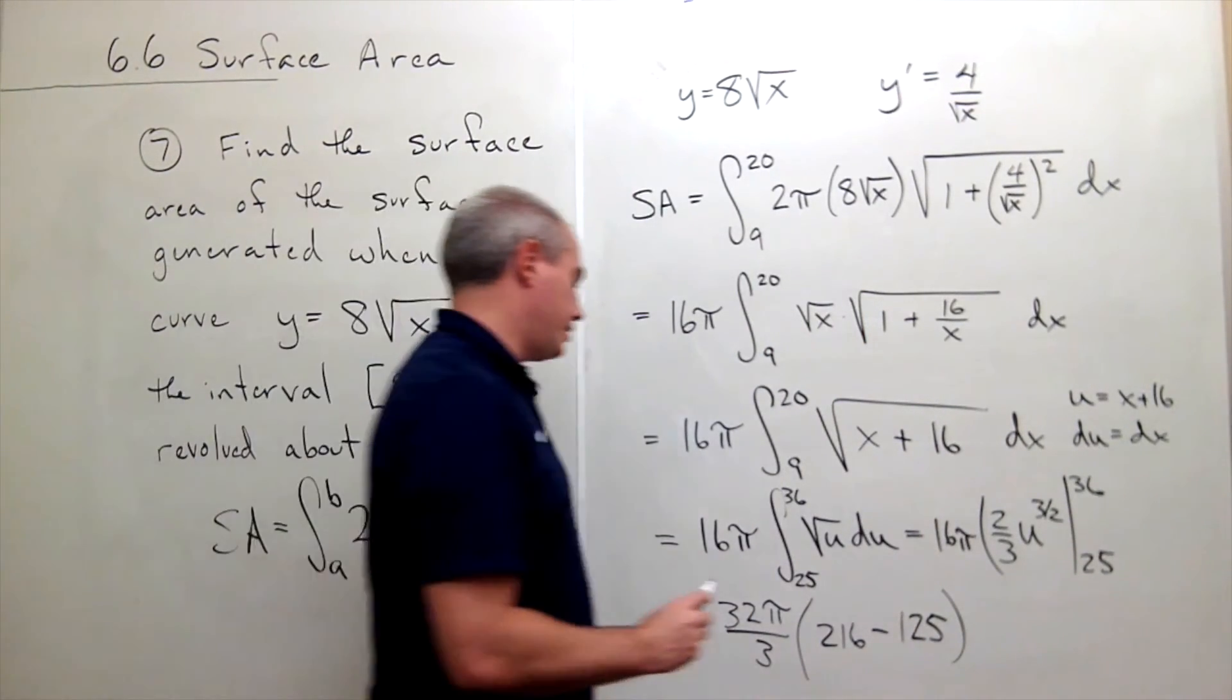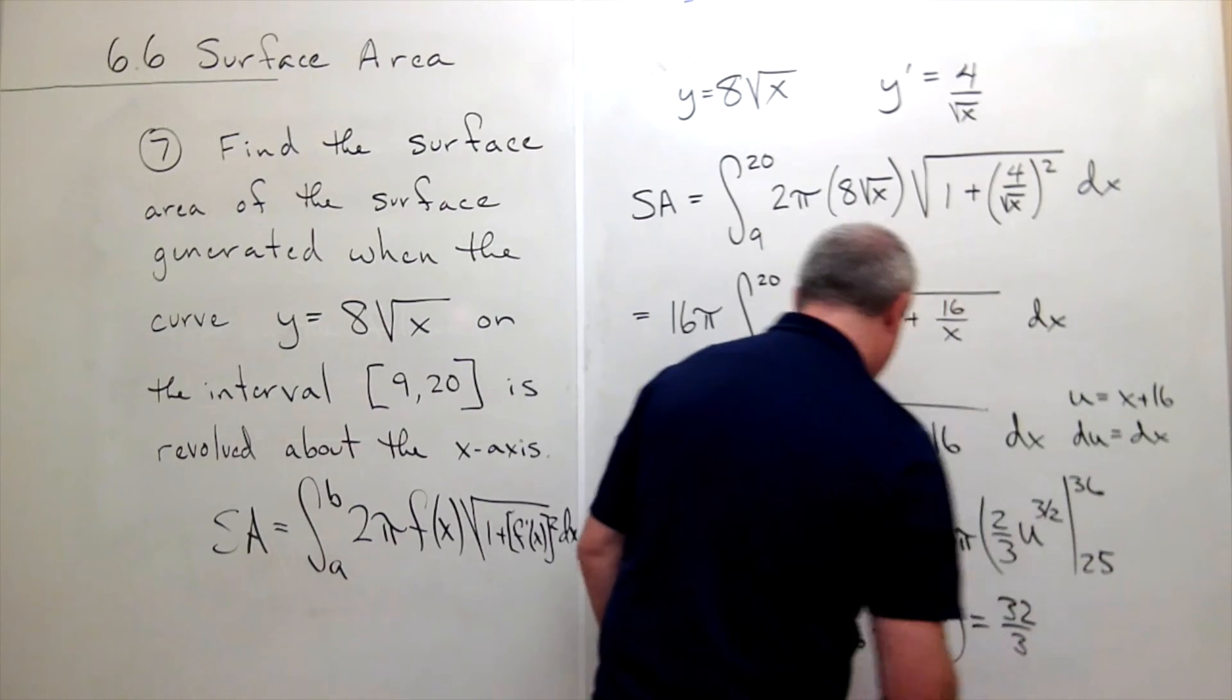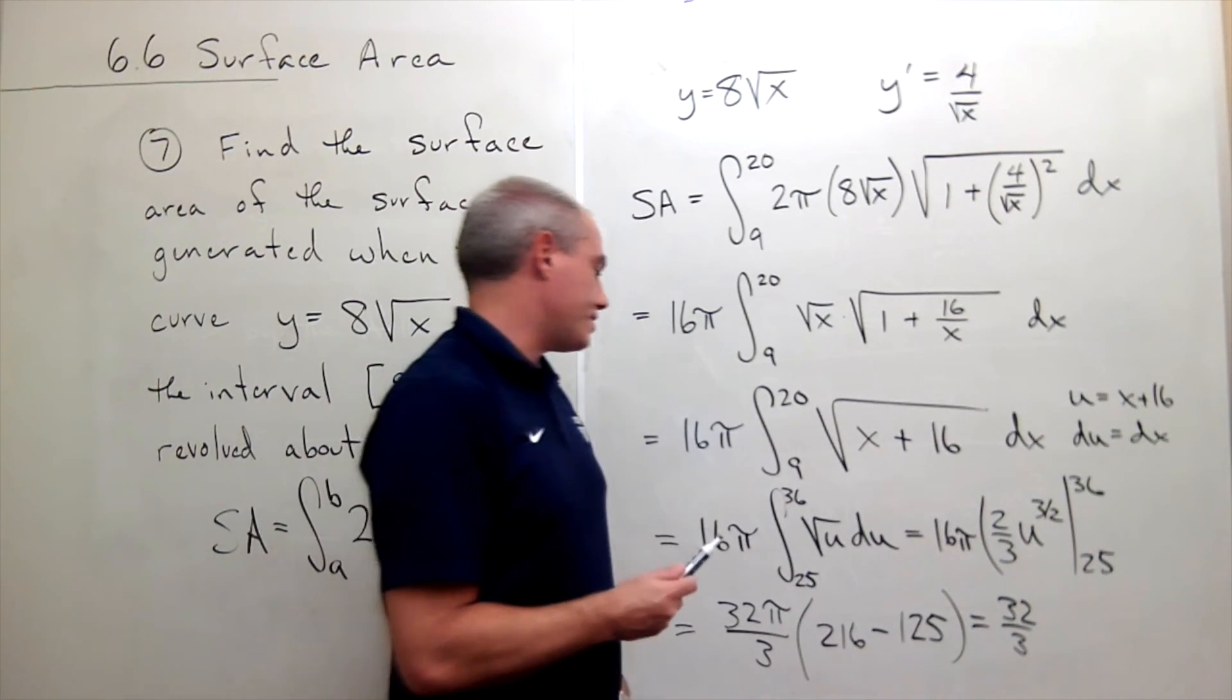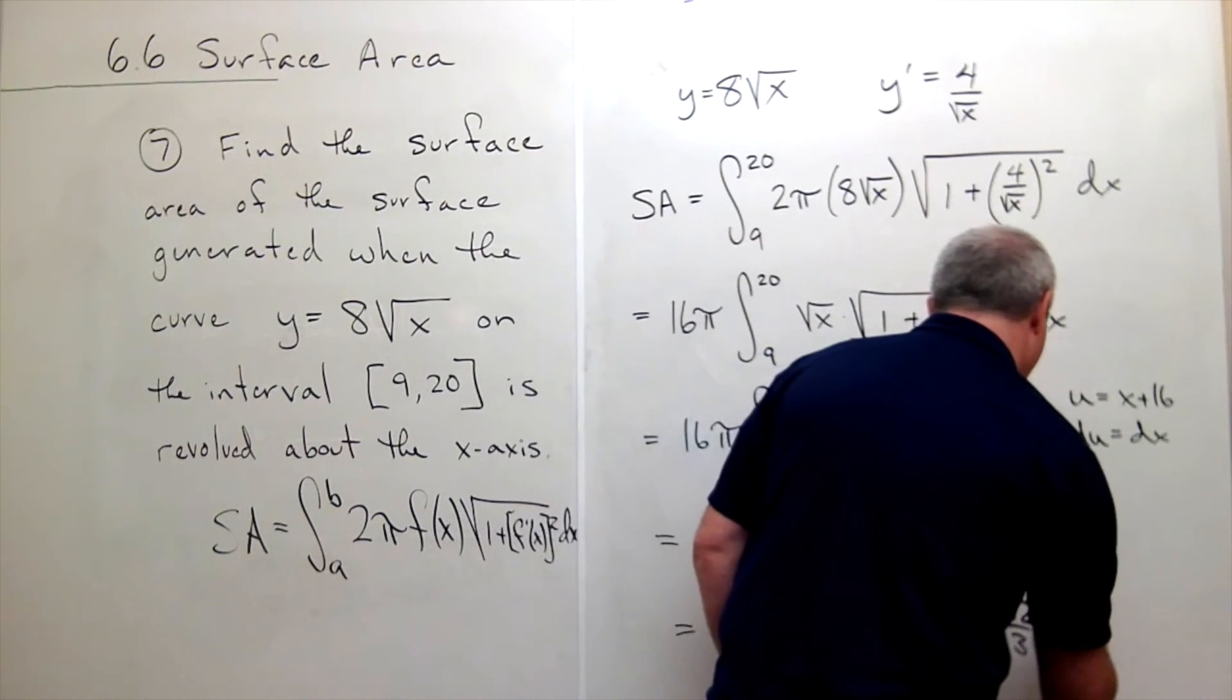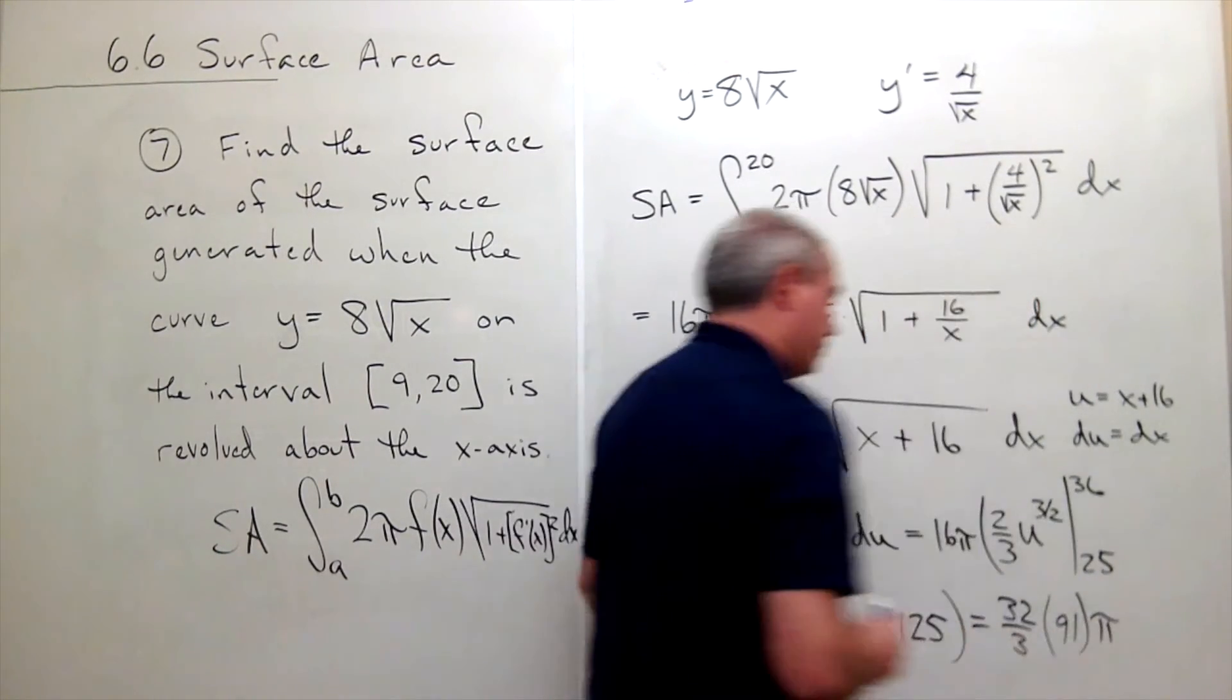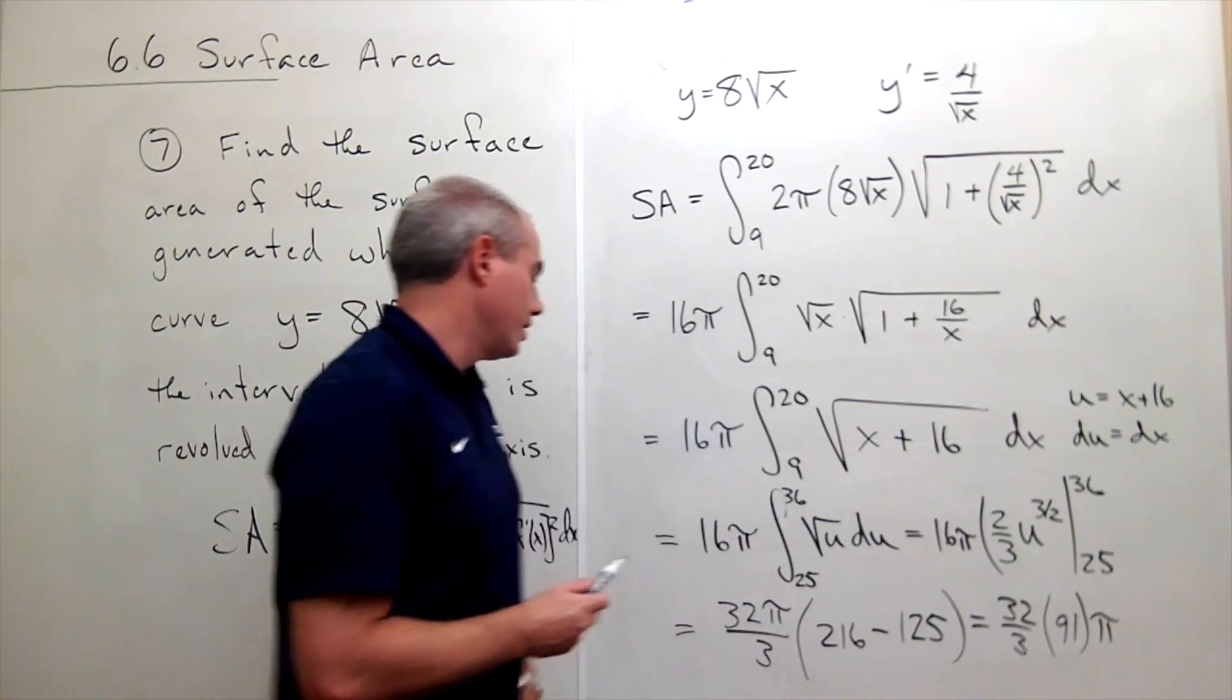So we get 32 thirds times 216 minus 125 is 75 plus 16, 80, 90, 91 times π. I'm making sure here that I did this right. 75, 85, 91. Looks good.